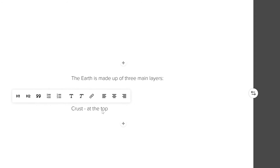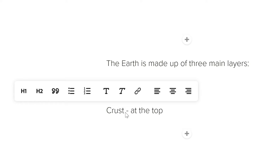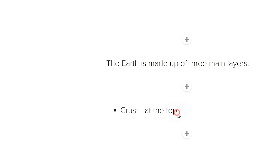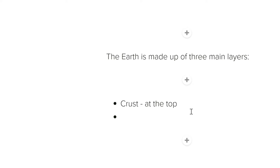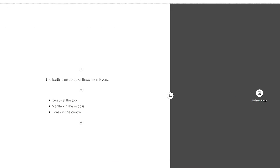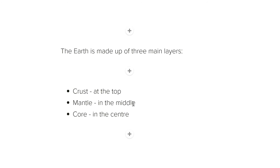I'm going to add another bit of text and write the three layers, starting with just one. I'll click on 'crust' and select bullet points. If I put my cursor at the end and press Enter, it automatically creates another bullet point. There we go — the three main layers of the earth: the crust at the top, the mantle in the middle, and the core in the center, which has an inner core and an outer core.